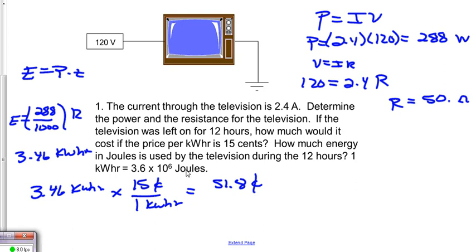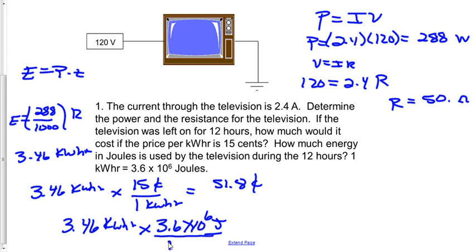Okay, now next we want to figure out how many joules that actually is. So I'll take 3.46 kilowatt hours and multiply that by 3.6 times 10 to the 6 joules per kilowatt hour, and that equals 1.22 times 10 to the 7 joules.